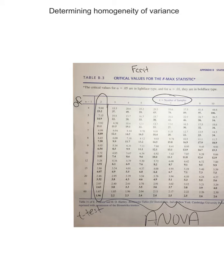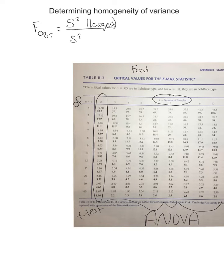The F-obtained is going to be this formula: the largest variance divided by the smaller variance. You're going to have two groups, especially when dealing with t-testing. Each group will have its own variance. Whatever the larger variance is, put it on top as the numerator, and the smaller variance goes on the bottom, because you're going to have two groups.